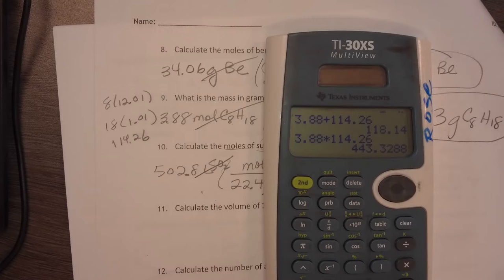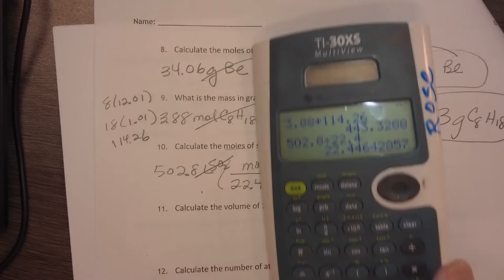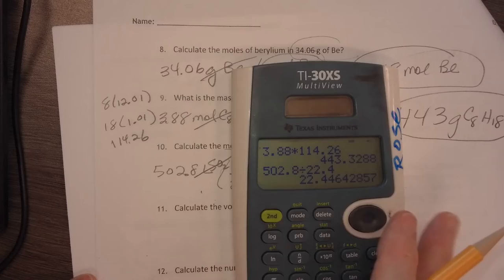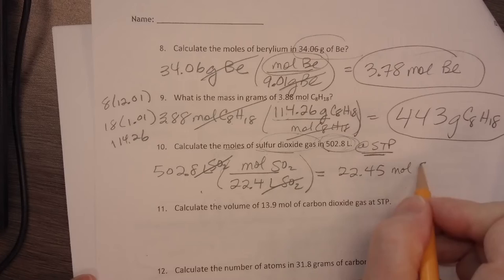502.8 divided by 22.4 is 22.44. I can only have, I need four significant figures. So I will have, say, 22.45 moles of sulfur dioxide.